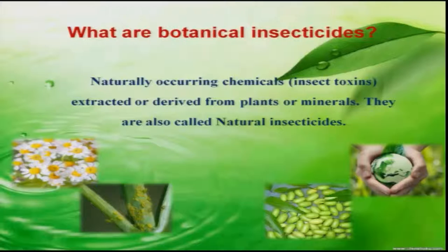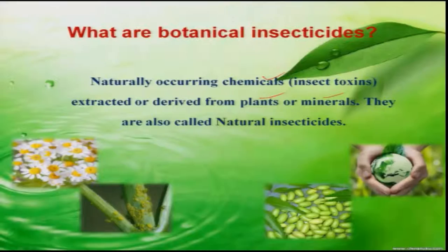Before that, let us see what exactly botanical insecticides are. These are naturally occurring chemicals derived from plants, or sometimes even minerals. They are also called natural insecticides.